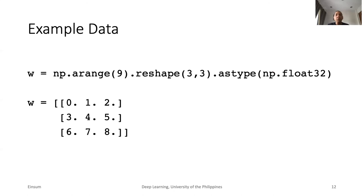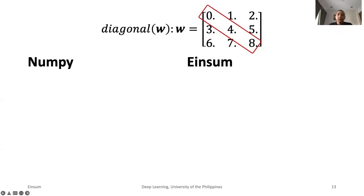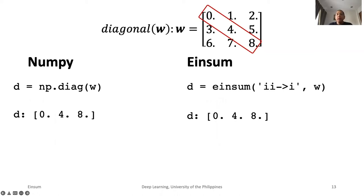Let us work on some properties of square matrices. Let us synthesize a 3 by 3 square matrix. Extracting the diagonal elements in NumPy is through the Diag function. Meanwhile, for EinSum, for this notation, there is no summation. It simply tells EinSum to keep all elements with the same row and column indices. The identical results for both NumPy and EinSum are shown.